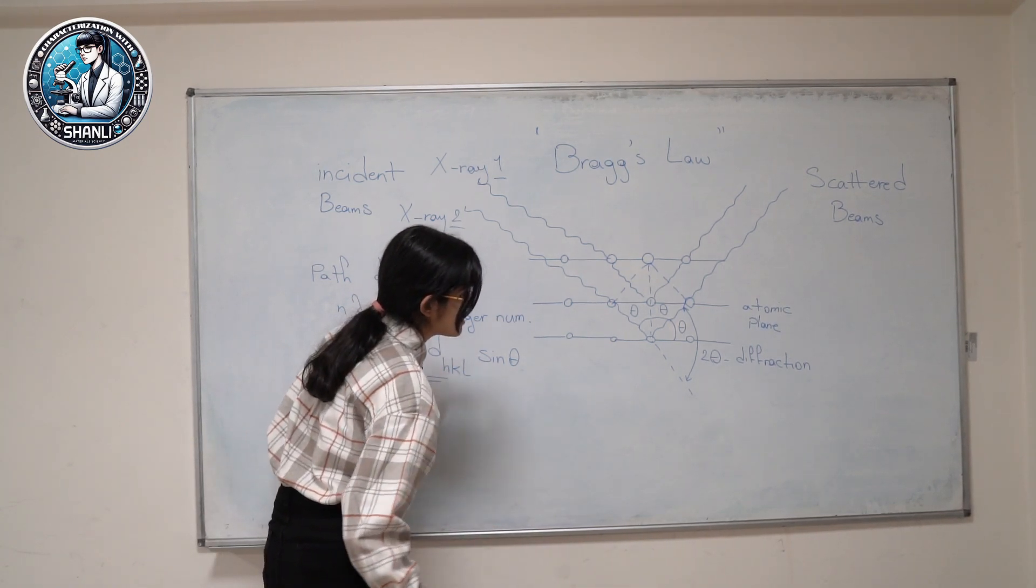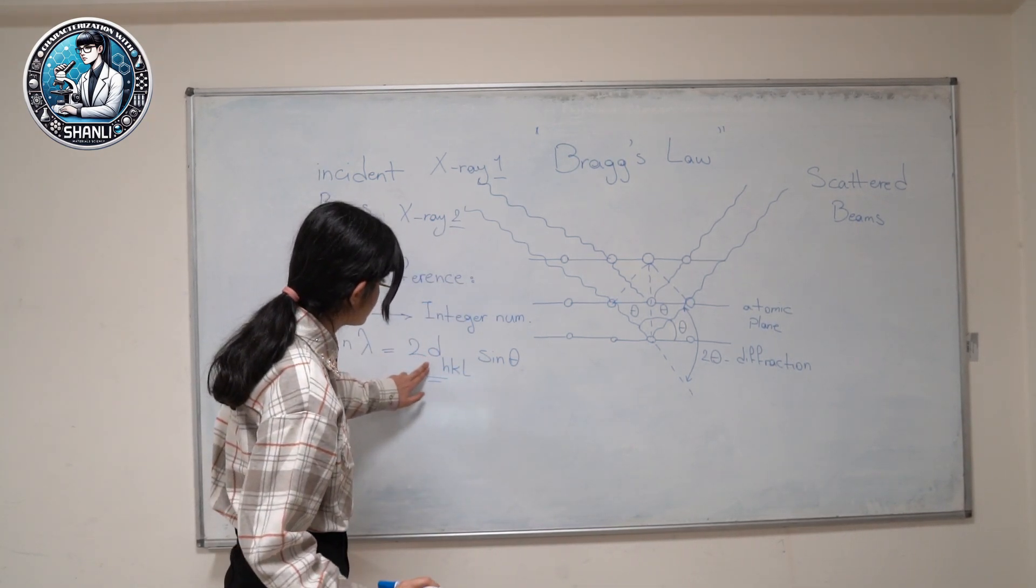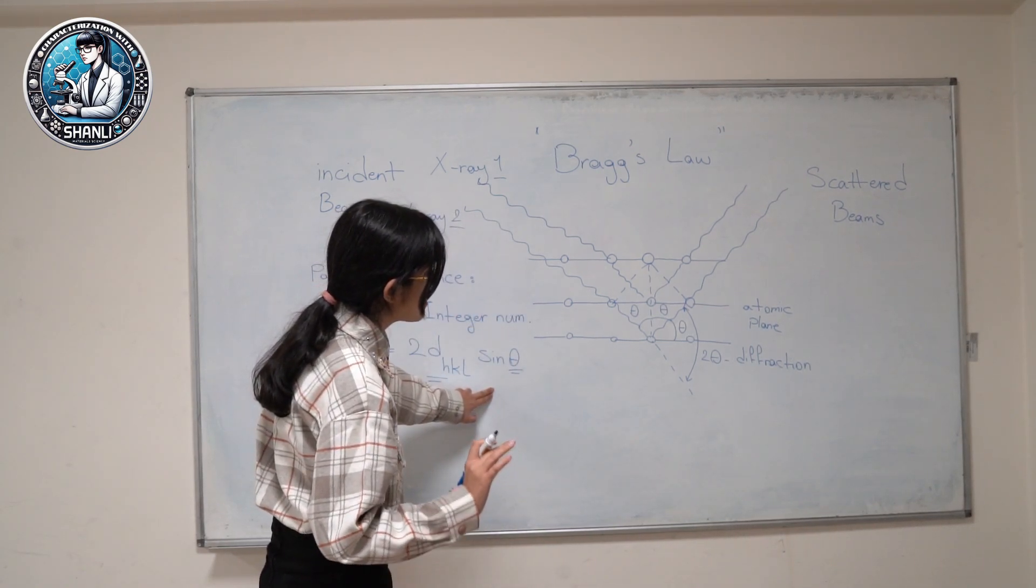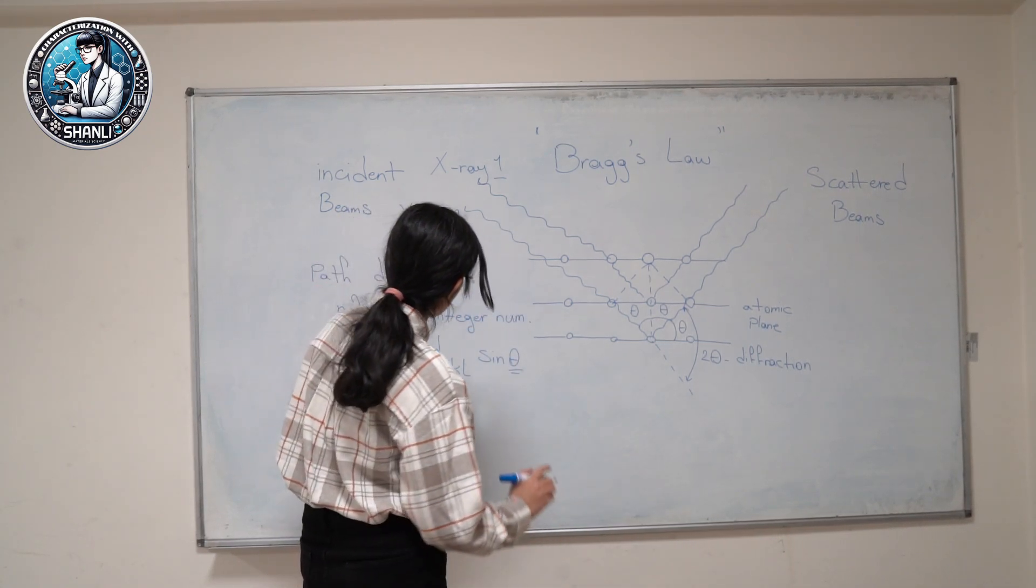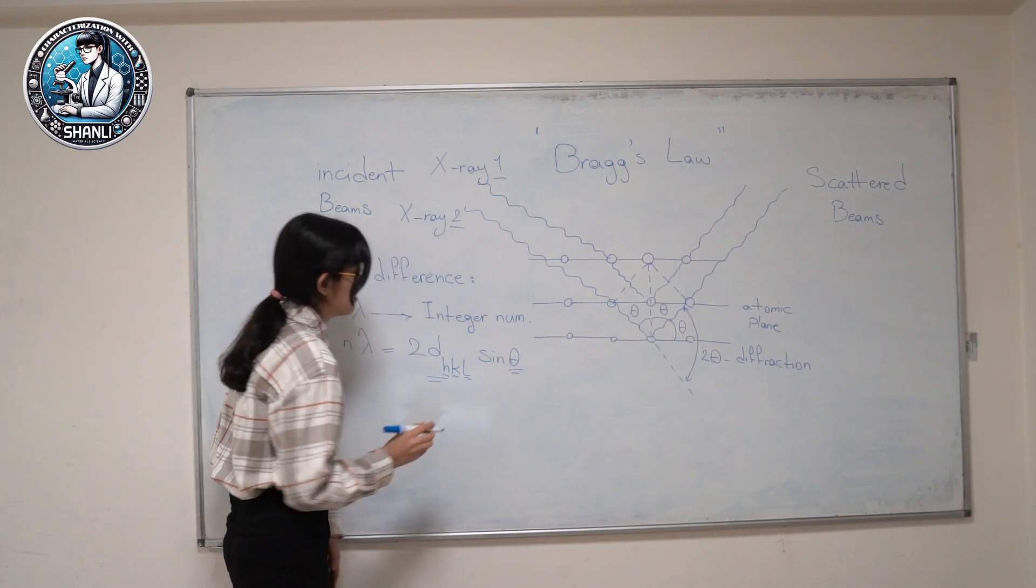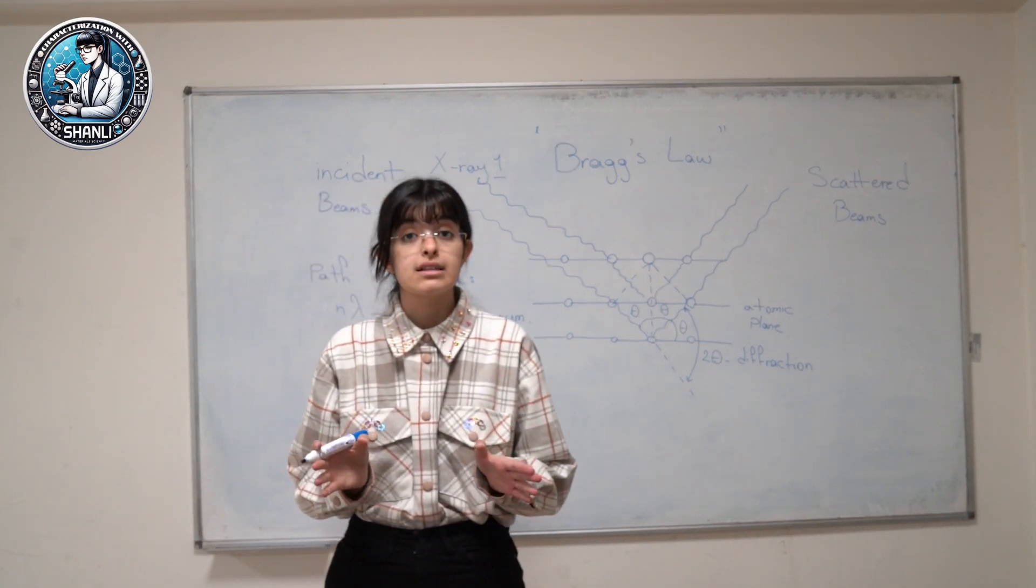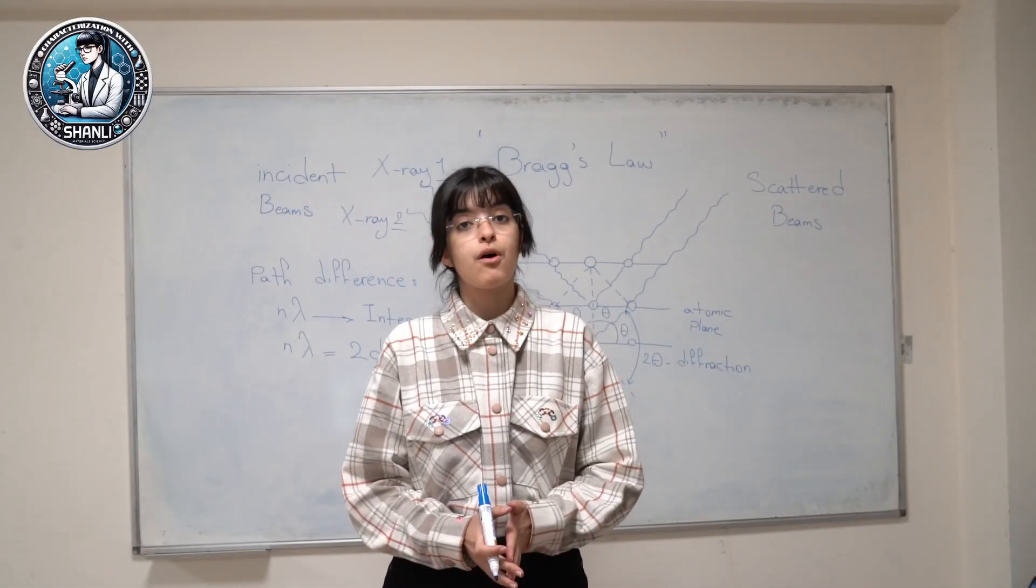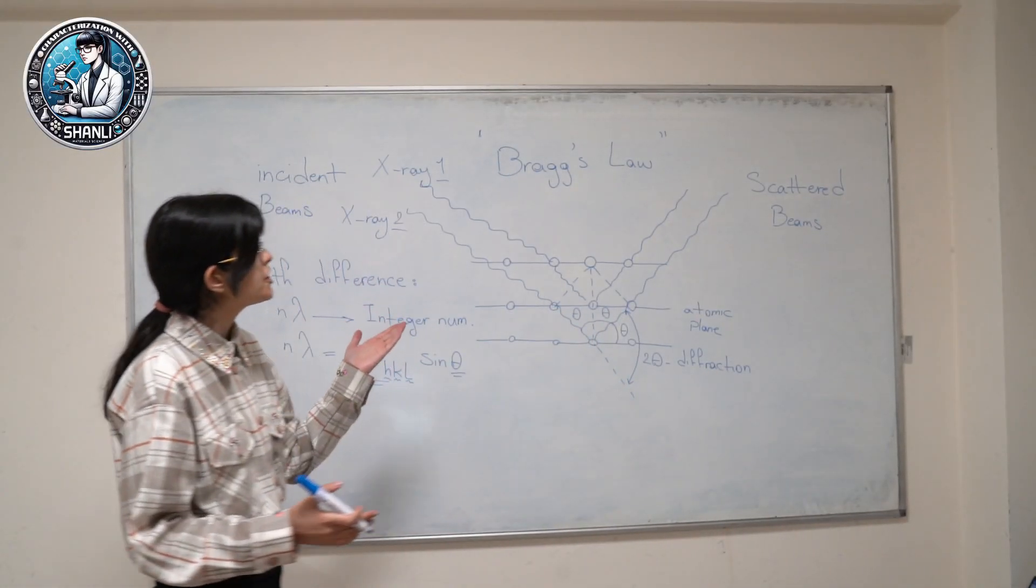d is the spacing between the planes, and theta here is the angle of incidence. Also, we have h, k, l amounts which provide us more information about our atomic plane. In the last part of our Bragg's law equation, I want to give you some tips about this formula.